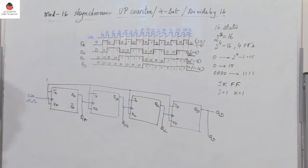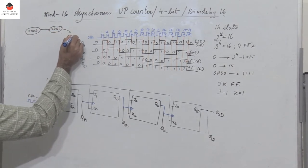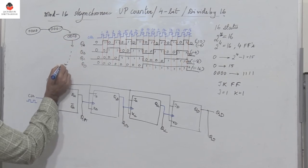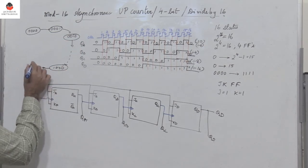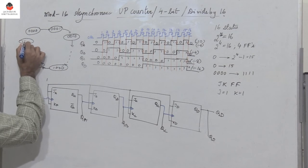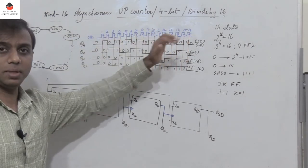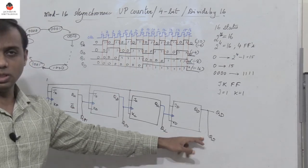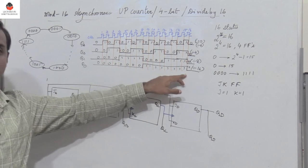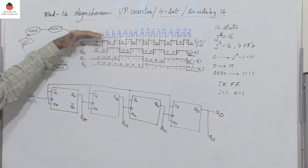The state diagram starts at state 0000, progresses to 0001, 0010, and so on through 1000, 1001, all the way to 1111, then loops back to 0000. This is the mod 16 asynchronous up counter — a 4-bit counter with divide-by-16 output. Taking output at QD gives divide-by-16; after QC, divide-by-8; after QB, divide-by-4; and after QA, divide-by-2 — all with respect to the clock input.